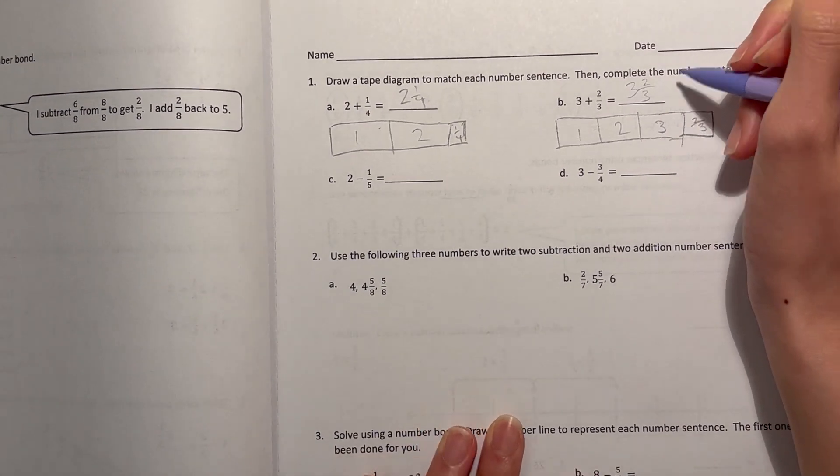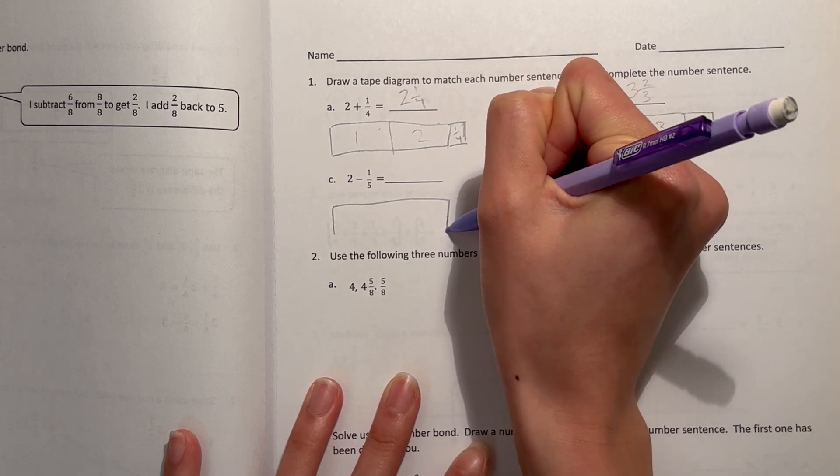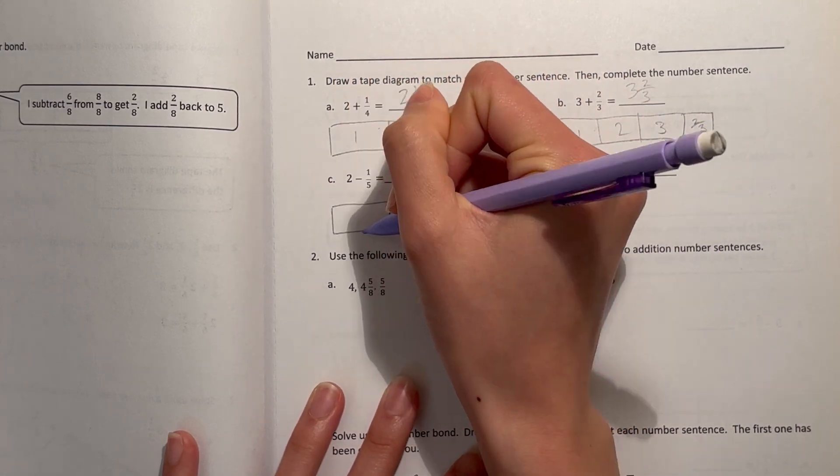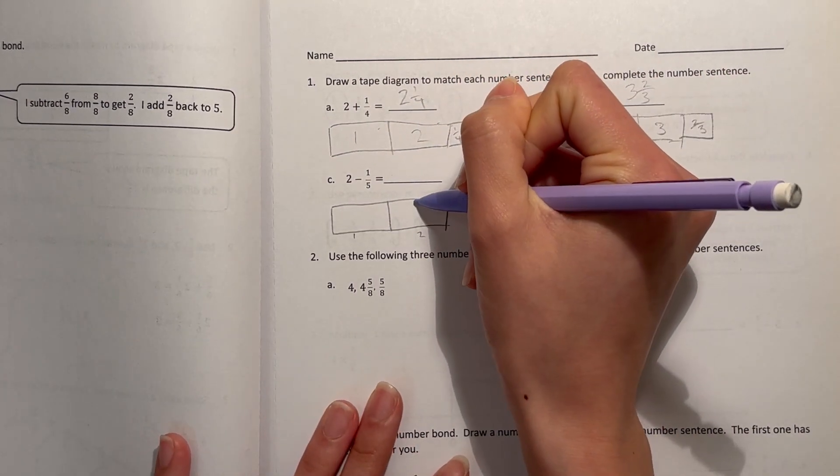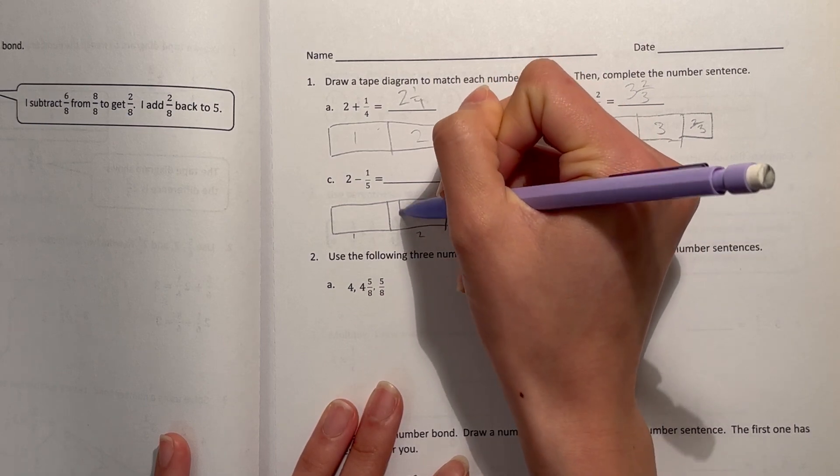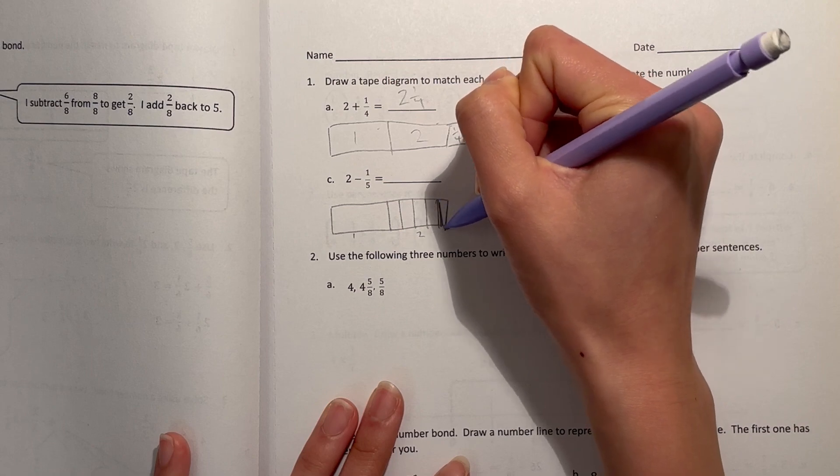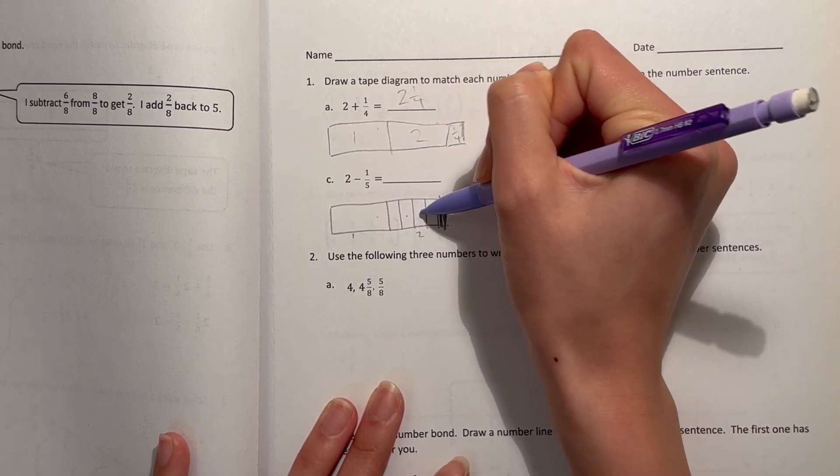All right, but now we're moving on to subtraction. So 2 minus 1 fifth. I'm gonna first draw 1 and 2, but actually I'm gonna draw like 1 and 2. Minus 1 fifth. So I can separate one of the wholes into fifths. So minus 1 fifth. I'm gonna shade that part out. So now it's 1 and 4 fifths.